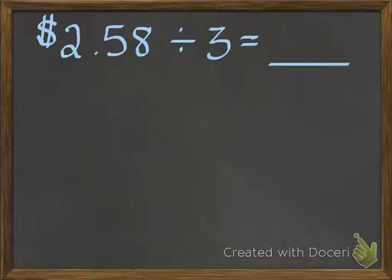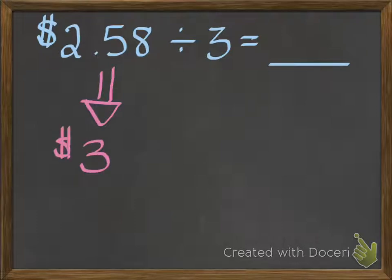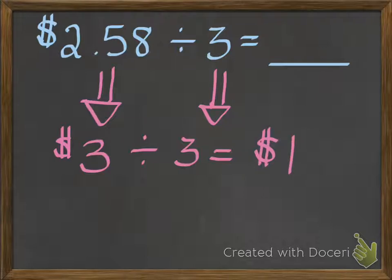Now before I start doing the division, I'm going to go ahead and estimate. It's important that I estimate my answer first. I'm going to change that $2.58 to a compatible number and round it up to $3, and I'm going to keep the other three the same. If I had $3 divided by three people, then I know each person would get $1. Now since I rounded $2.58 up to a higher number and got one, I know the actual answer is going to be less than one — it's going to start with a decimal point.